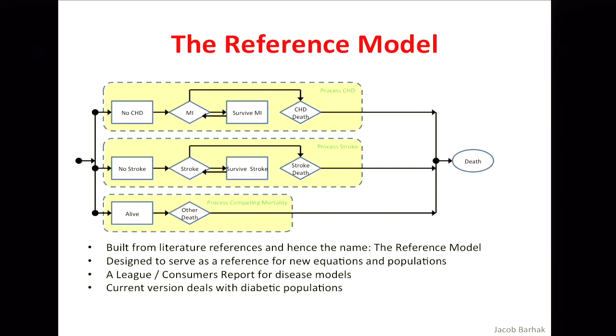The reference model is called the reference model because it's based on references to the literature. The information there is generally public, not proprietary, not restricted. There is no access to individual data — it's all summary data that exists somewhere. But actually there is much more summary data than individual data. If you have a dataset, a certain population you have access to, you're not allowed to combine it with other datasets or give it to other people. However, when you publish information from a clinical trial, you put it publicly and everyone can access it.